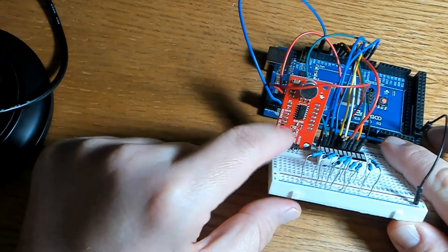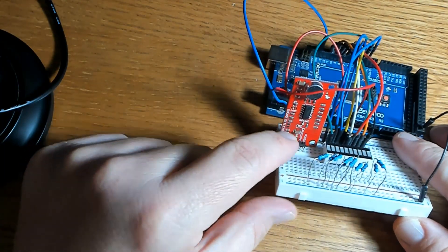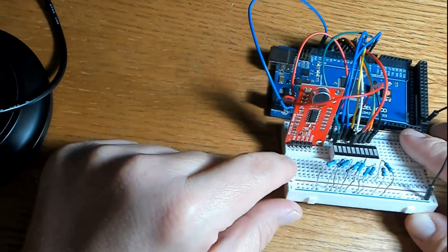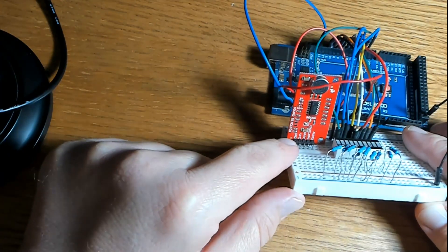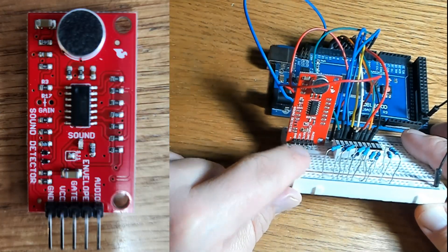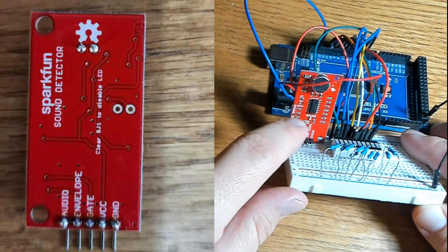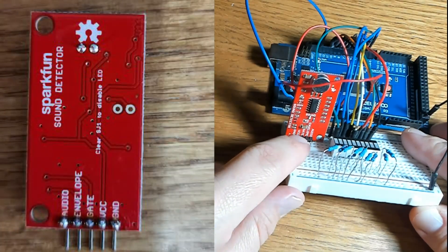and then the negative side of the LED bar, I connected all those to ground rail there on the breadboard with a 220 ohm resistor. Now right next to that I have the sound detector and I'm using the ground pin, the VCC pin which is 5 volt and the envelope pin that's connected to A0.